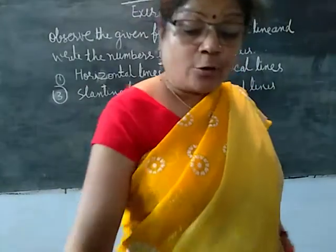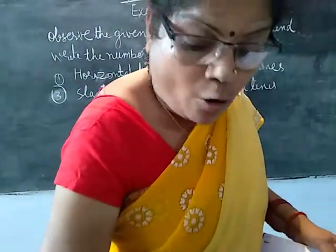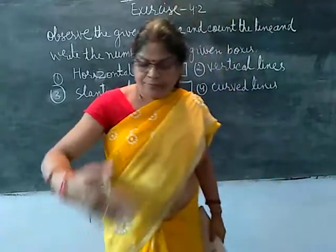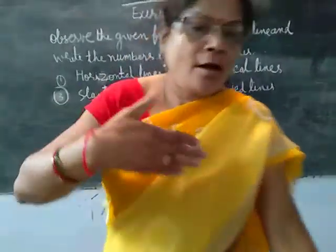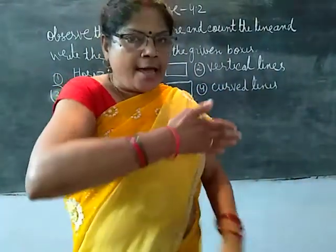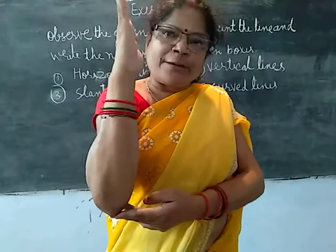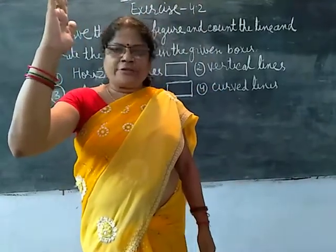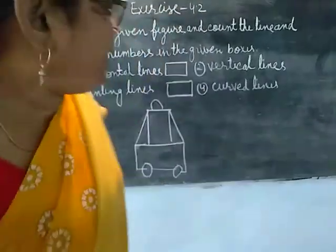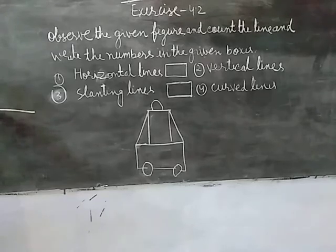Do you know what is the name of the horizontal line? What is the horizontal line? Look, the horizontal line is like this. This is the horizontal line. What is the horizontal line? This is the vertical line. If you have a line like this, it will be the vertical. This line is horizontal and this is the vertical line.